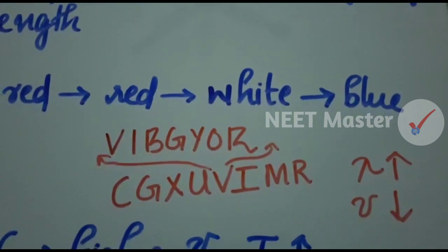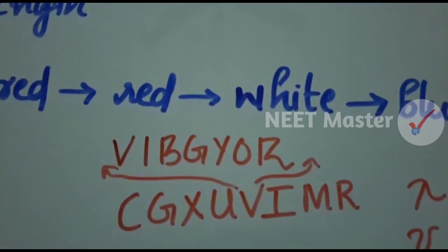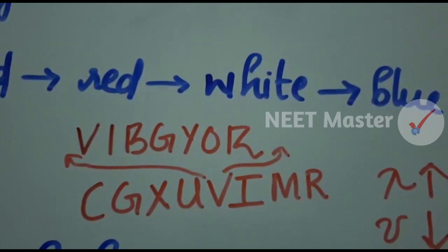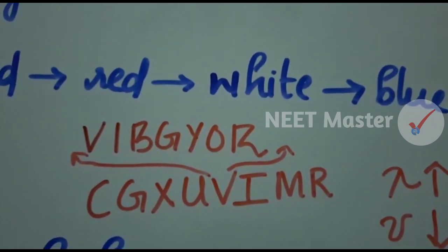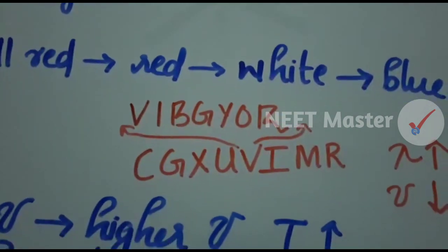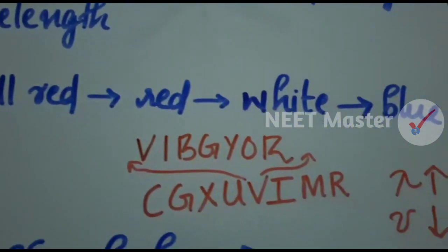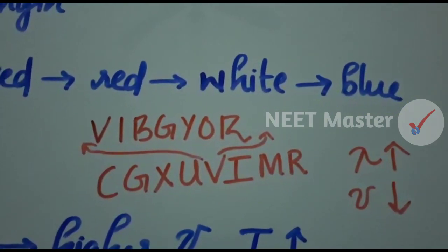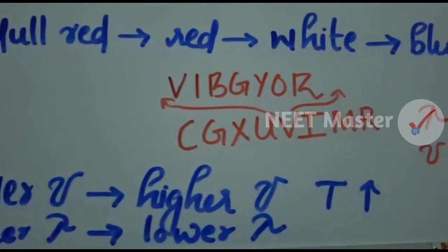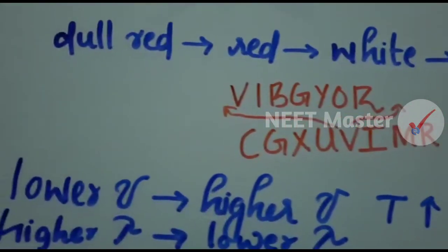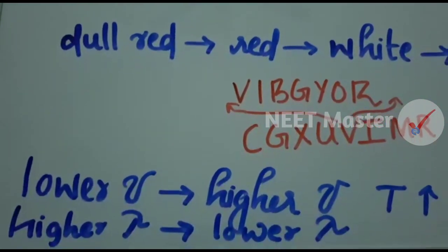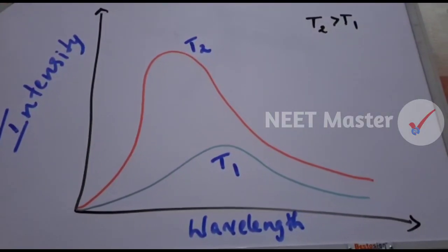Going from red, the wavelength increases. In the visible spectrum from red to violet, the wavelength increases while frequency decreases. As we add blue color, the temperature will increase. At the same level, the temperature will continue to increase with blue color.